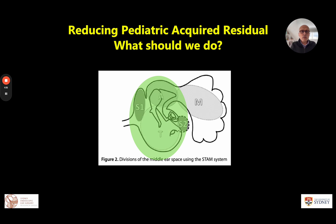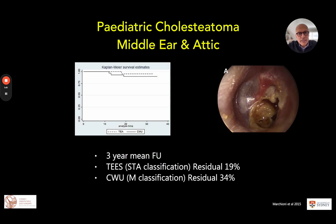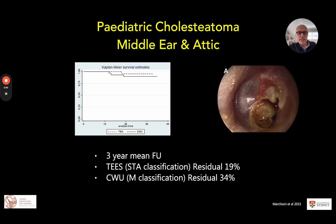Looking at pediatric acquired disease focused on the mesotympanum and attic: the first paper on endoscopic work in pediatric cholesteatoma isolated to this location came from Professor Macchione's group in Modena. With a three-year mean follow-up and appropriate power, they found that for lower-stage disease in the mesotympanum and attic, the residual rate endoscopically was 19%, compared to higher residual rates with canal wall-up surgery, noting that disease tended to spread into the mastoid in those cases.